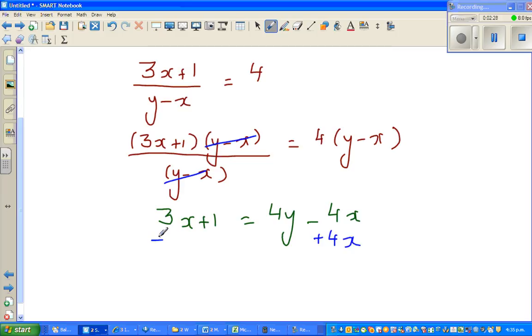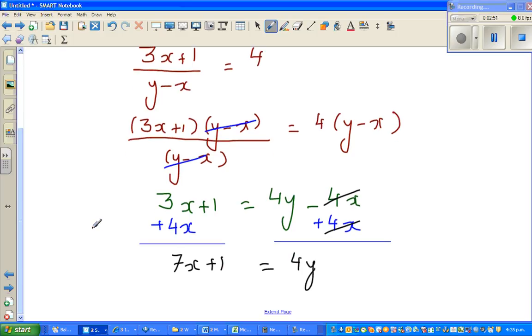These are two sides of the equation. I want to be as tidy as possible. This and this gets cancelled, so you've got 3x plus 4x which is 7x plus 1 equals 4y.